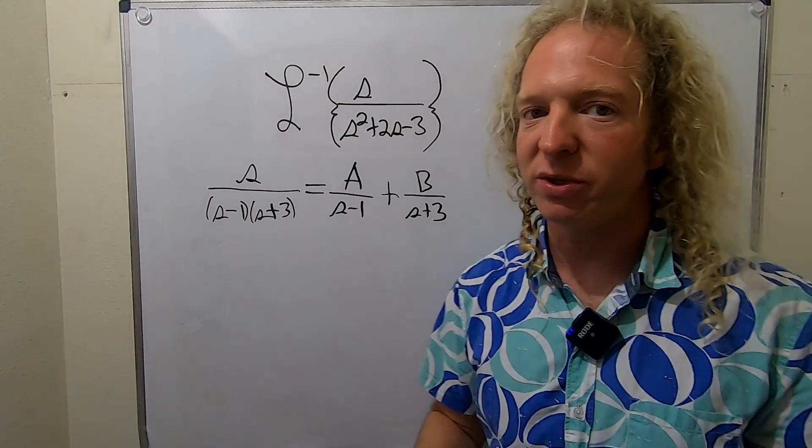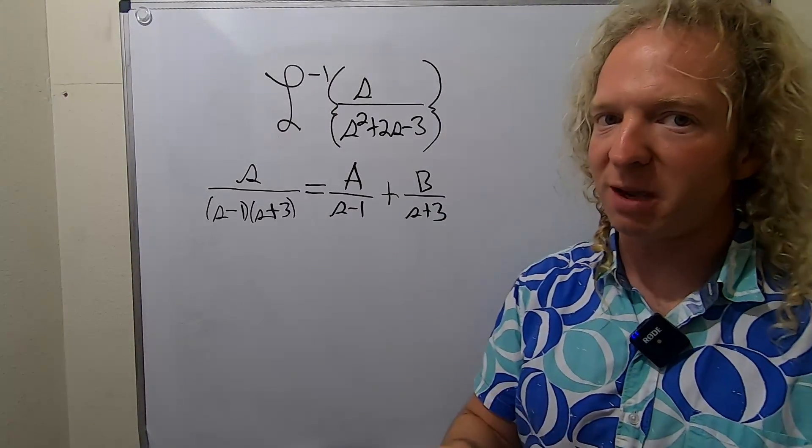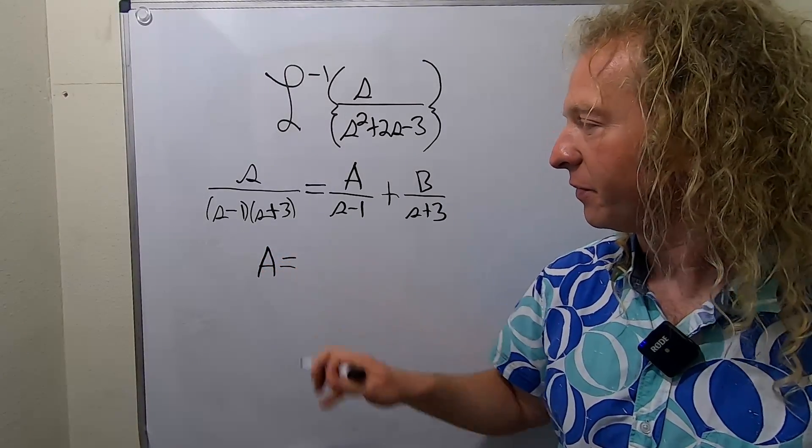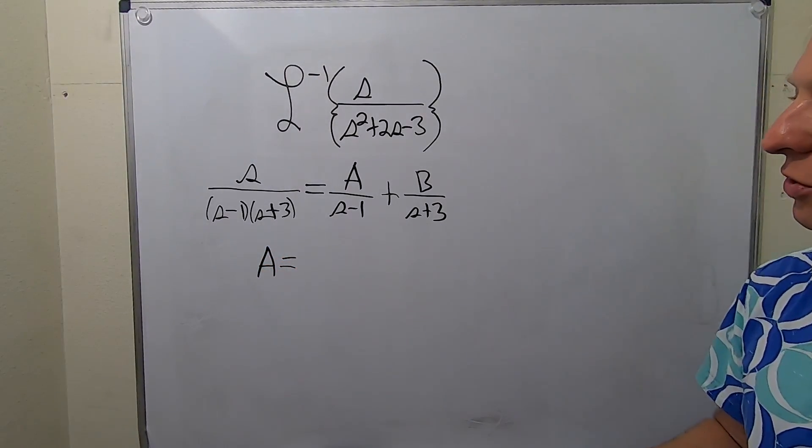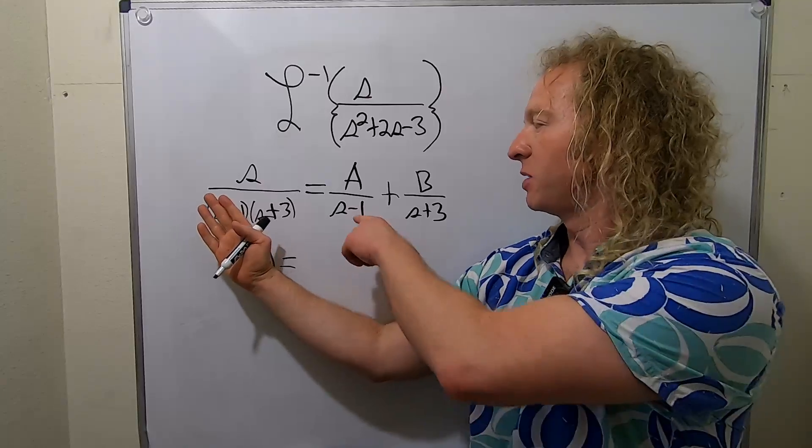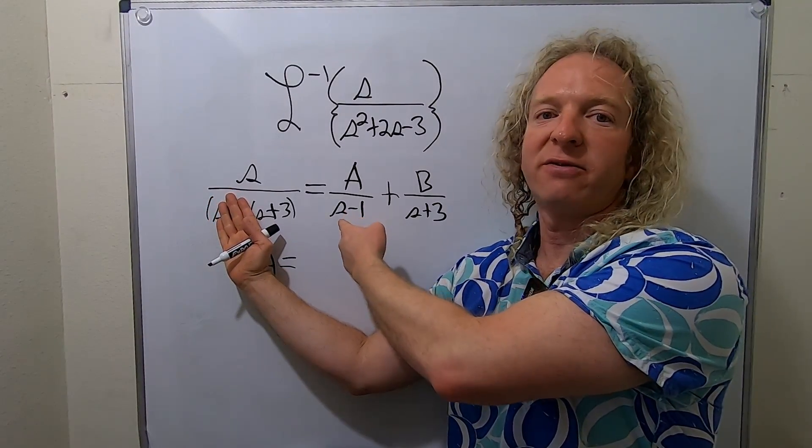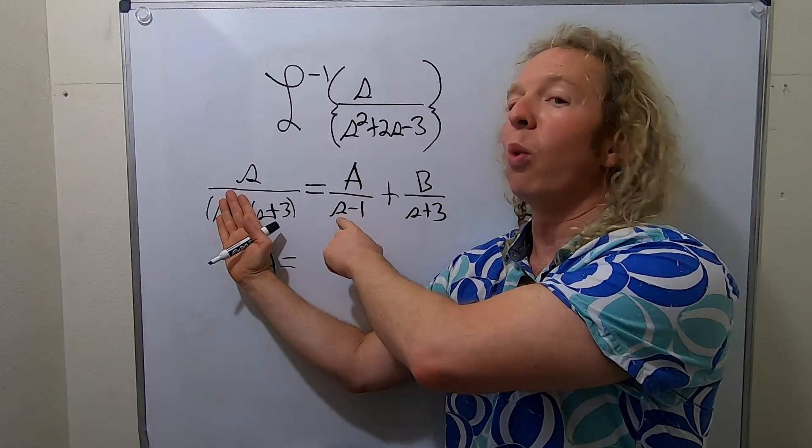All right, so to use the cover-up method, we just have to use our hands. Or if you're using paper, use your fingers to cover stuff up. So to find A, what you do is you cover up what's under A. So s minus 1. And then you look here and you ask yourself, what makes this undefined? What makes the bottom 0? Well, 1.